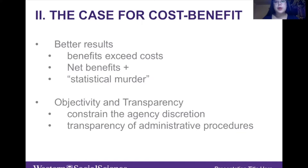One famous concept is the statistical murder theorem proposed by John Graham. From his view, cost-benefit analysis keeps the balance between money-saving and life-saving. From a political point of view, cost-benefit analysis would produce a better regulatory process — one that is more objective and transparent, and thus more accountable to the public. It aims not only to constrain agency discretion but also to guarantee the transparency of administrative procedures. Making the public part of the decision-making process about the environment is key to applying cost-benefit analysis.